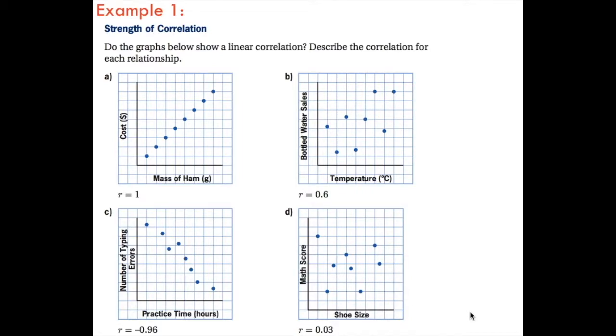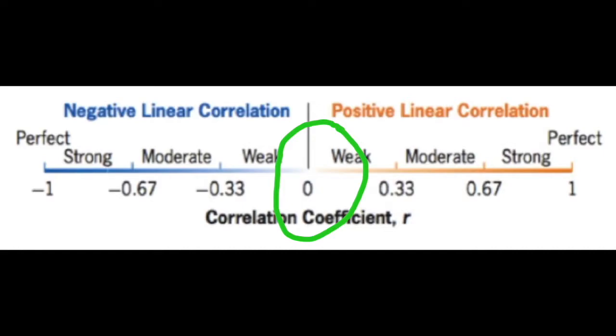Lastly, it's very tough to find a correlation between math score and shoe size. These data points are kind of all over the grid here, so because there's a correlation coefficient of 0.03, we've got a very weak, if any, correlation between math score and shoe size.